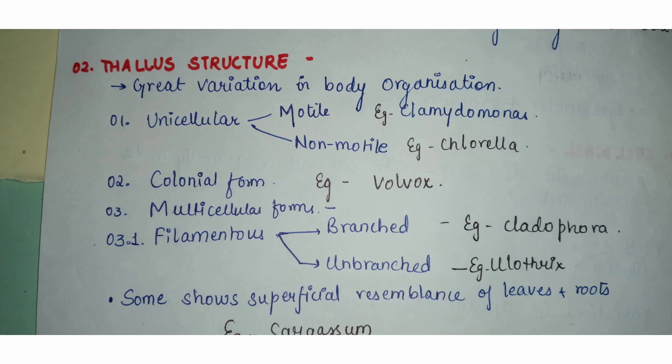There is great variation in body organization among algae. The very first form is unicellular — the whole algal body consists of just a single cell, and that single cell performs both the vegetative and the reproductive functions.